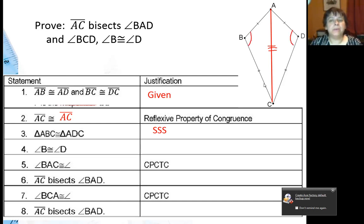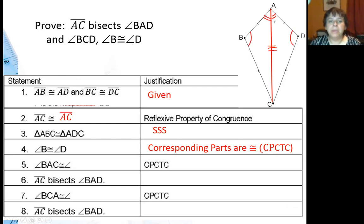I can also tell you that angle B and angle D are congruent, because they're corresponding angles of congruent triangles. So corresponding parts are always congruent, that's CPCTC, corresponding parts of congruent triangles are congruent. I can also tell you that angle BAC up here is congruent to DAC.